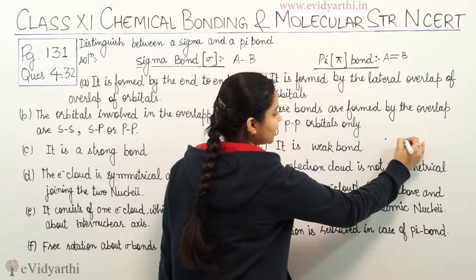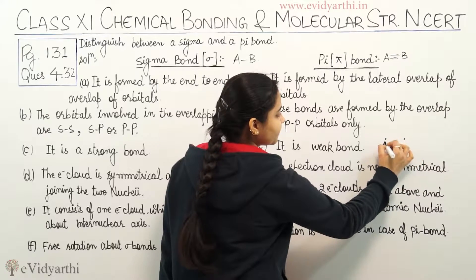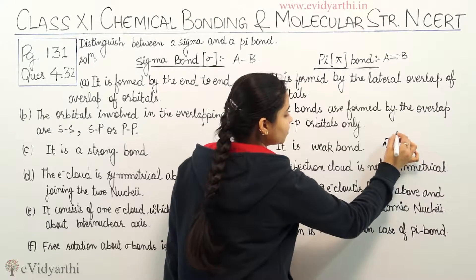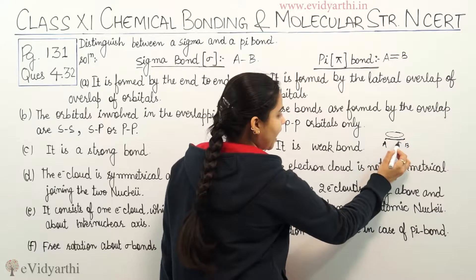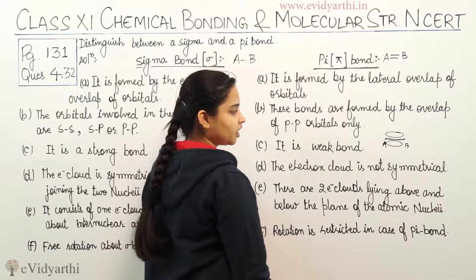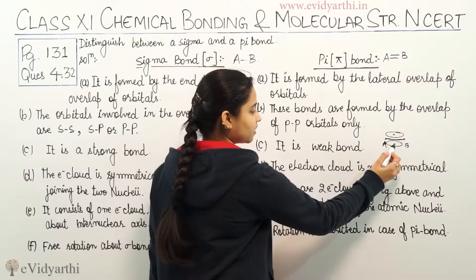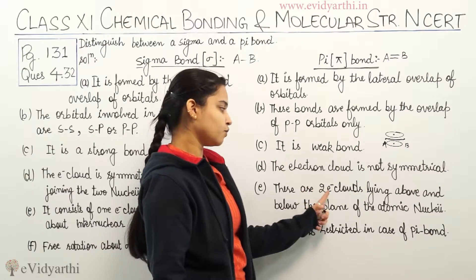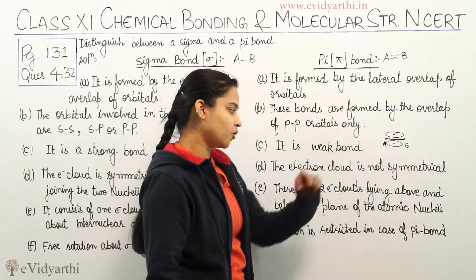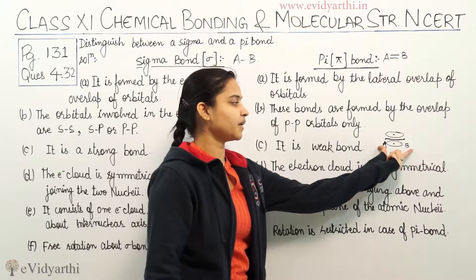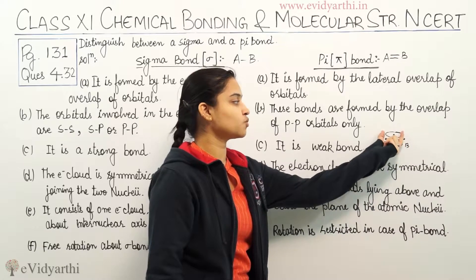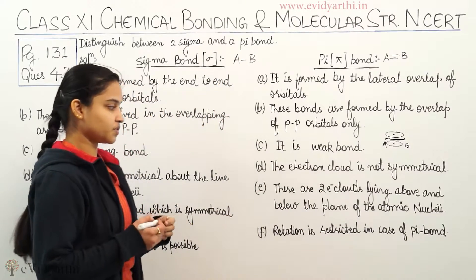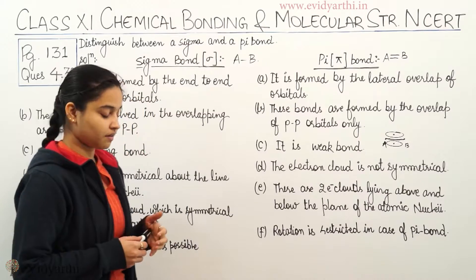This is one nucleus and this is another nucleus — suppose nucleus A and nucleus B — they are joined by a bond. For the pi bond, there are two electron clouds above and below the plane of atomic nuclei. This cloud and this electron cloud together form the pi bond. It consists of two electron clouds lying above and below the plane of atomic nuclei, and rotation is restricted in the case of a pi bond.